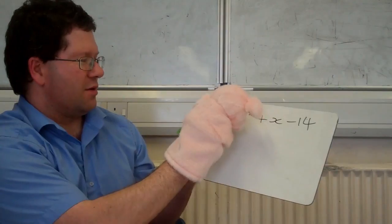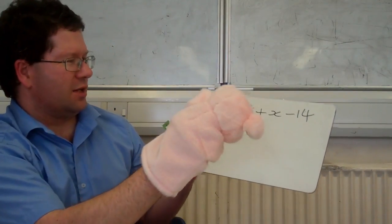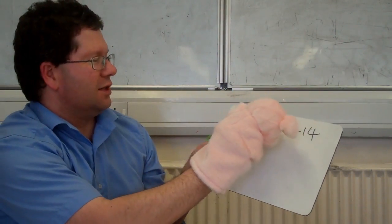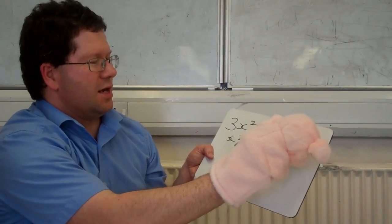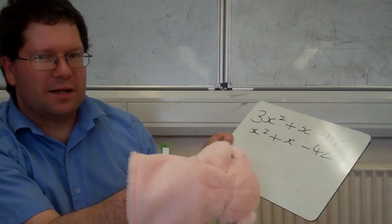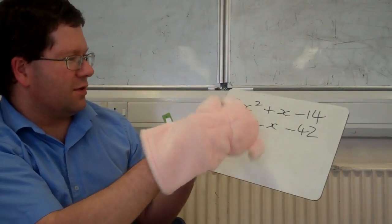What we do, it's a bit weird. We change that 3x squared into an x squared and we times the minus 14 by 3 instead. So you get x squared plus x minus 42. And that's easier to factorise, because you've only got one x squared.